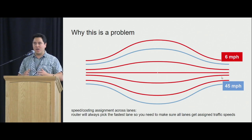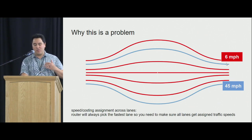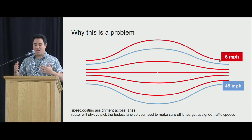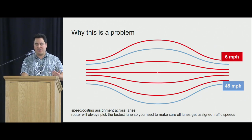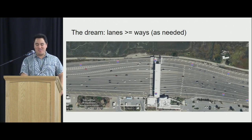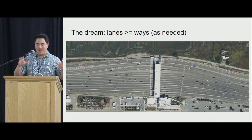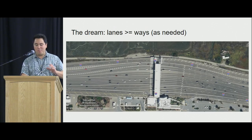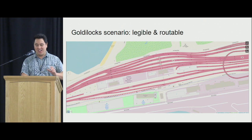So why is this a problem? If you have fan-out, you have to track every single one of these edges. What if you have traffic and you've accidentally assigned it to only 90% of the edges? Then your routing engine will fail to capture that traffic, and it'll just route through the free-flow speed segments. The dream is that the lane count can be greater than the way count as needed, but you don't need a way for every single lane.